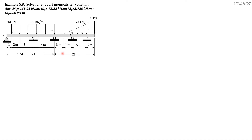Let's solve example 5.8. This problem has seven degrees of freedom, but we can reduce it to five because member EF may be replaced by its moment only. Since we deal with a five by five matrix, we will use Excel.